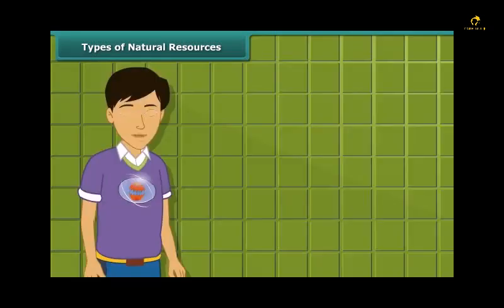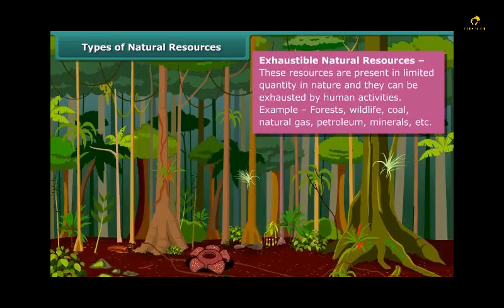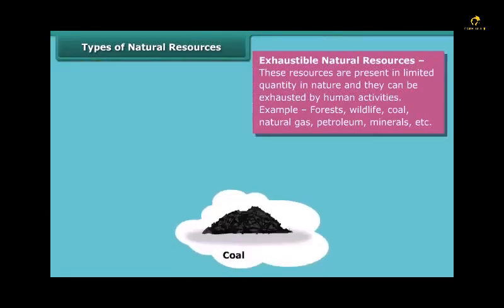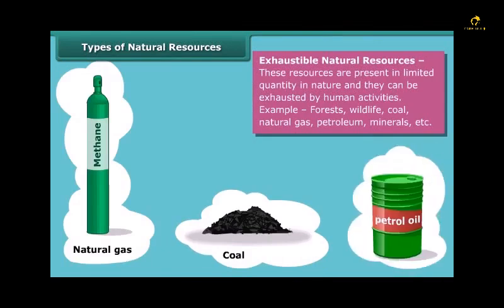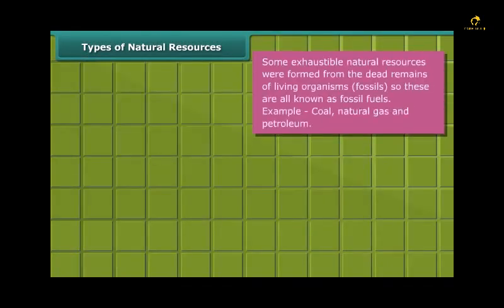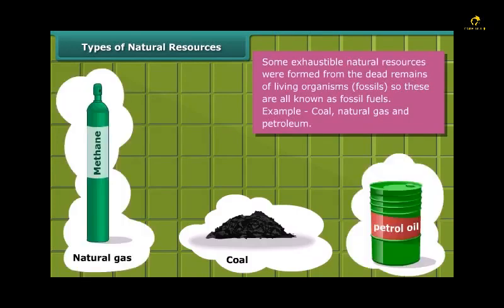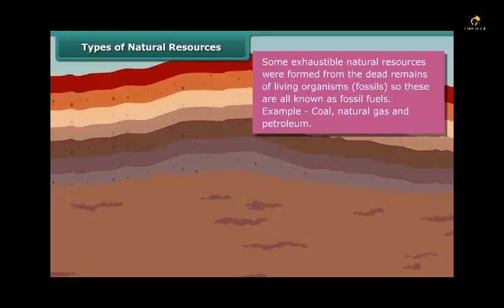The amount of exhaustible resources is limited, and they can be exhausted by human activities and consumption. Forests, wildlife, coal, natural gas, petroleum, and minerals are examples of exhaustible resources. Some exhaustible resources like coal, natural gas, and petroleum were formed from the dead remains of living organisms called fossils, and hence these are also known as fossil fuels.